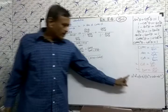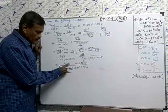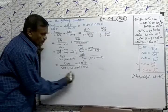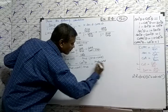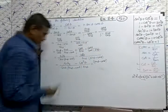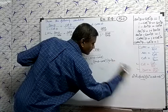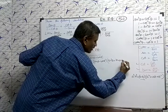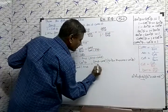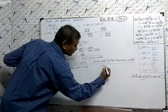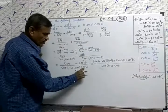We have sine cube and cos cube. There is one formula you should know: a cube minus b cube equals (a minus b) into (a square plus ab plus b square). Applying this formula to the numerator: (sine theta minus cos theta) into (sine square theta plus sine theta cos theta plus cos square theta), divided by cos theta into sine theta into (sine theta minus cos theta).